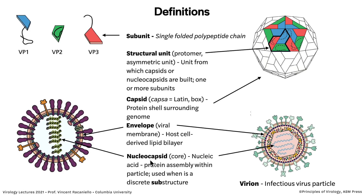The nucleocapsid, or core of the particle, is the nucleic acid-protein assembly within the particle. It's used when there's a discrete substructure. For example, influenza virus has eight RNA-protein complexes — that's the nucleocapsid. Herpes simplex virus has a capsid inside an envelope, so that's a nucleocapsid because it's a substructure. Whereas poliovirus — we don't call it a nucleocapsid; it's a capsid because there's no envelope. If you put an envelope around it, then the inner structure would be the nucleocapsid.